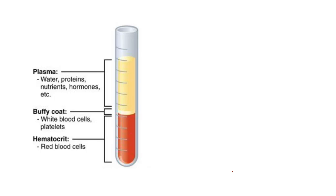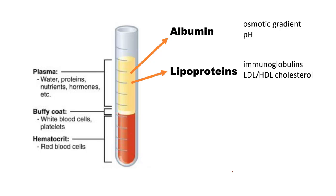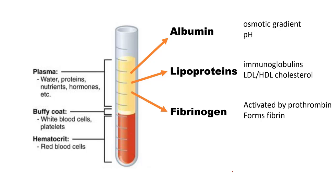Back to the plasma — there are three main proteins to know. Albumin maintains the osmotic gradient between blood and tissues and buffers pH. Lipoproteins are in two groups: immunoglobulins, and LDL and HDL cholesterol. Fibrinogen is the third plasma protein, used in the last step of forming a blood clot when activated by prothrombin.